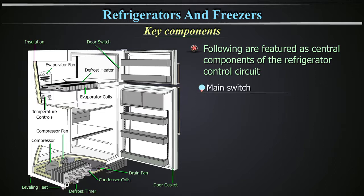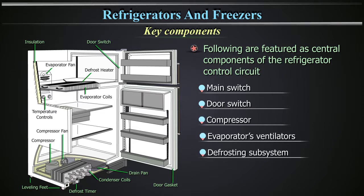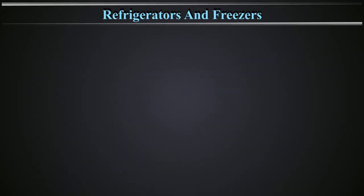The following are featured as central components of the refrigerator control circuits: 1. The main switch. 2. The door switch — it turns on the light when the door is opened. 3. The compressor. 4. The evaporator's ventilators. 5. The defrosting subsystem. 6. The resistor subsystem for defrosting or maintaining the equipment's components free from ice. 7. The thermostat.